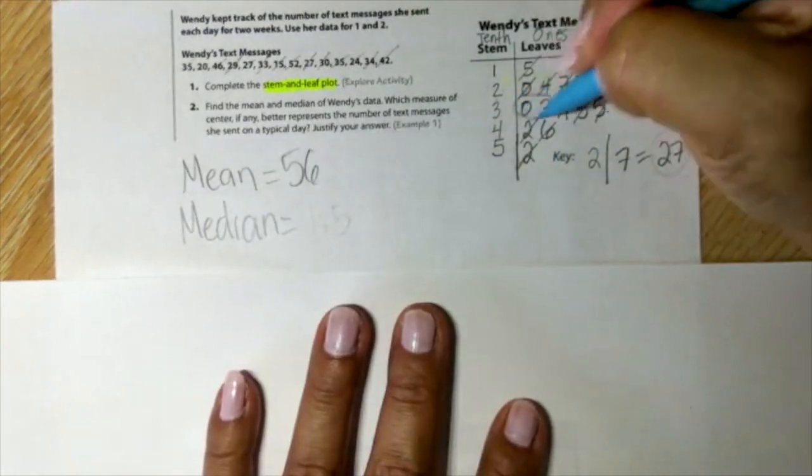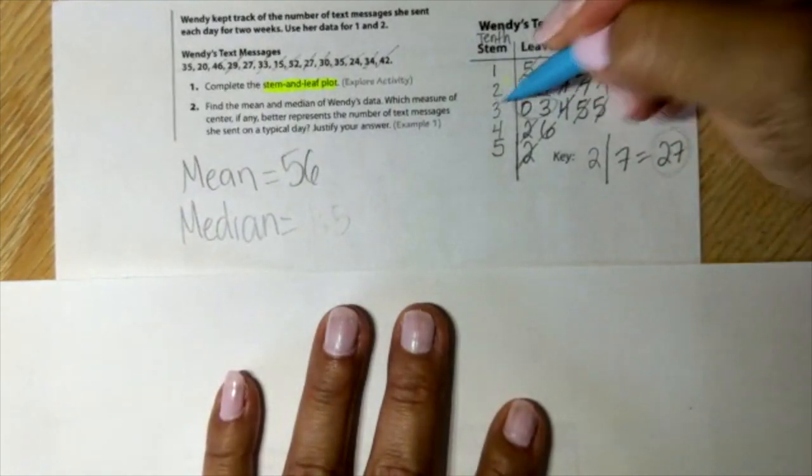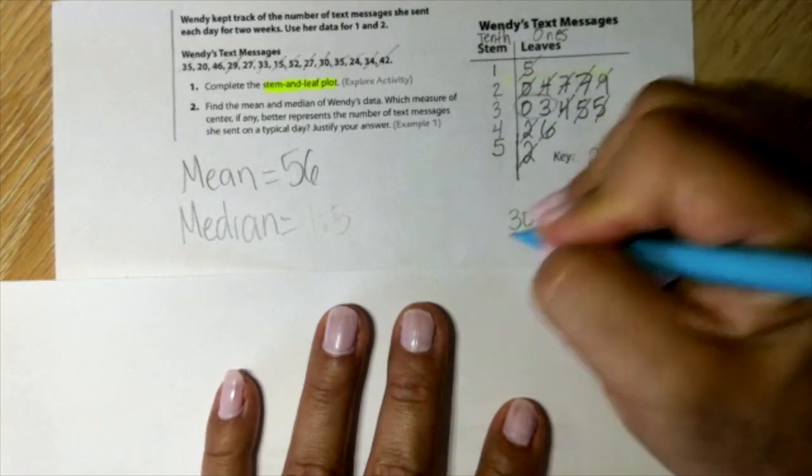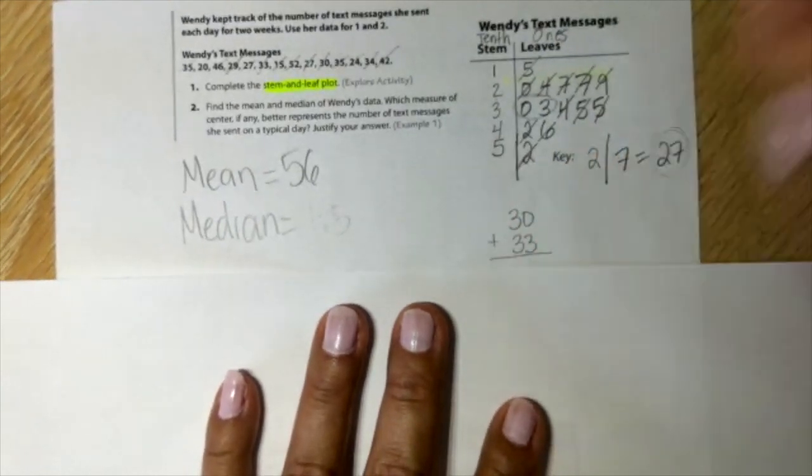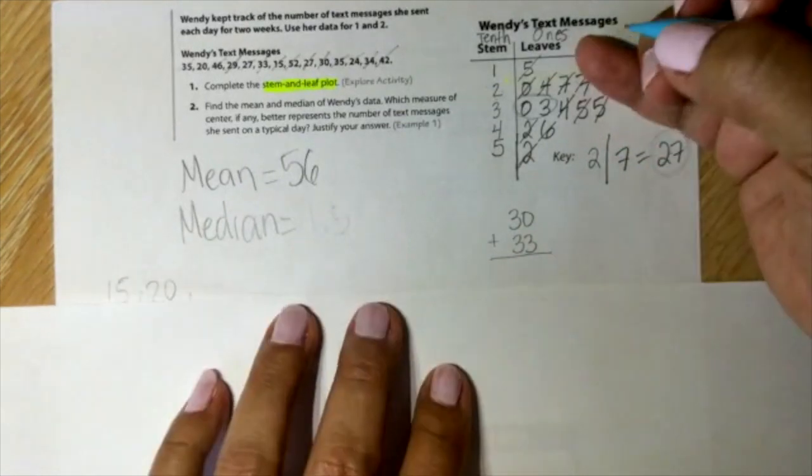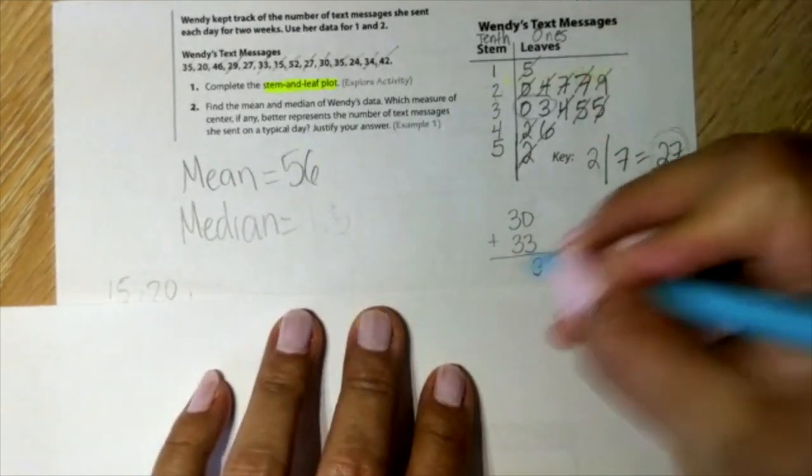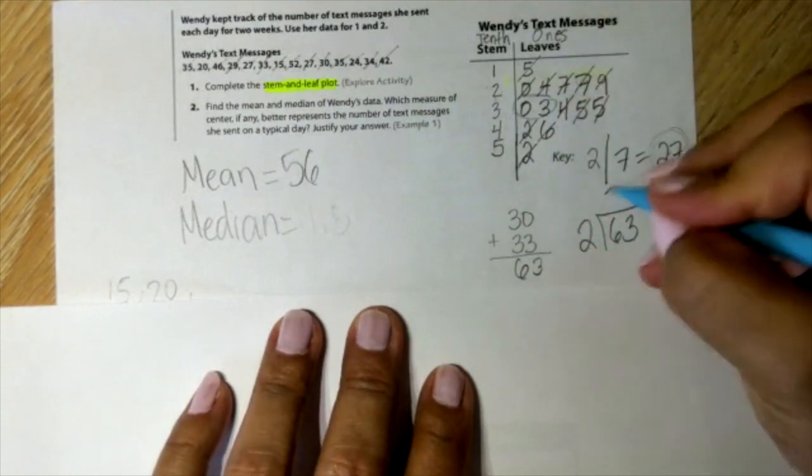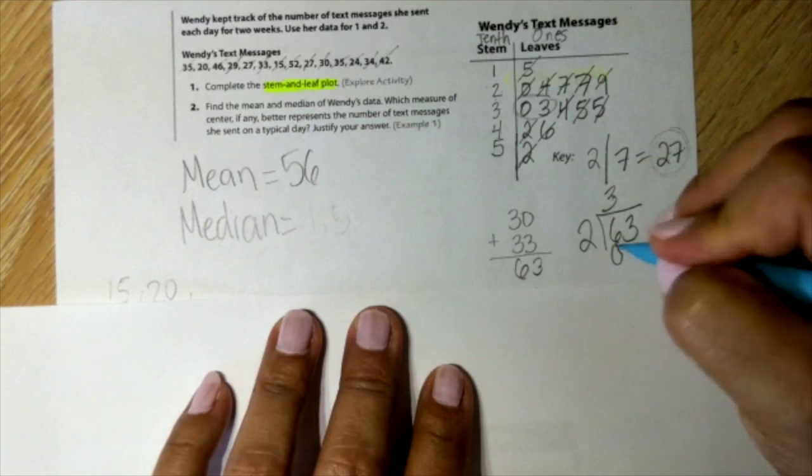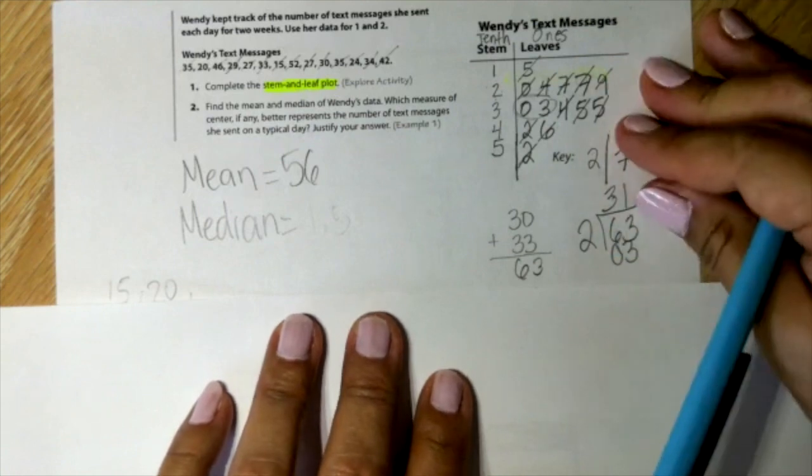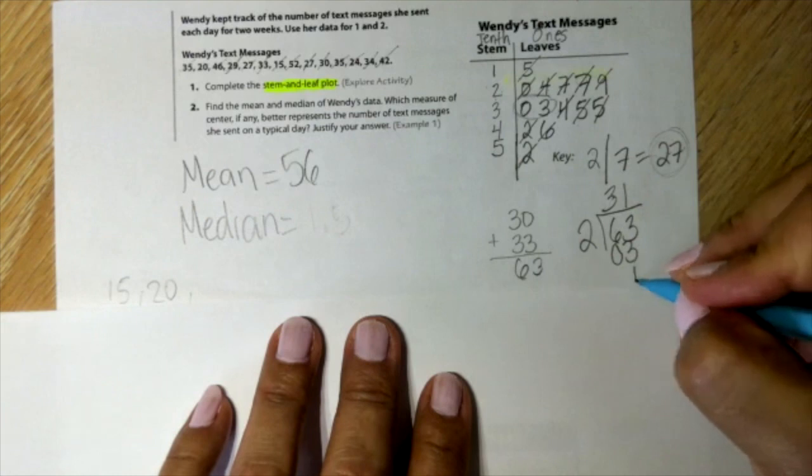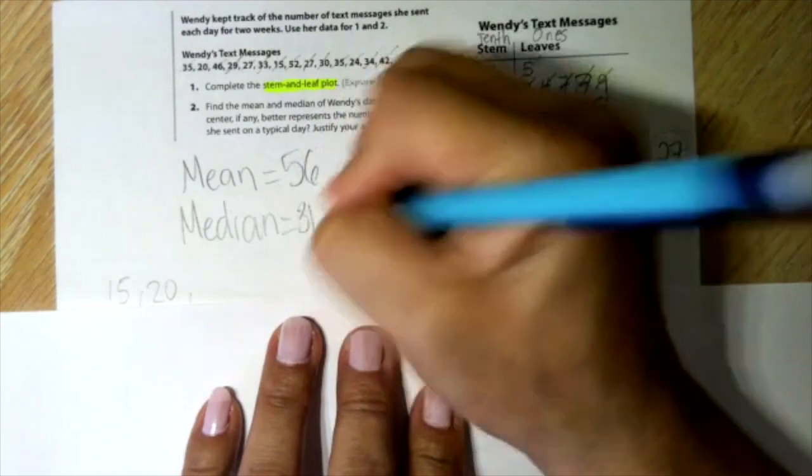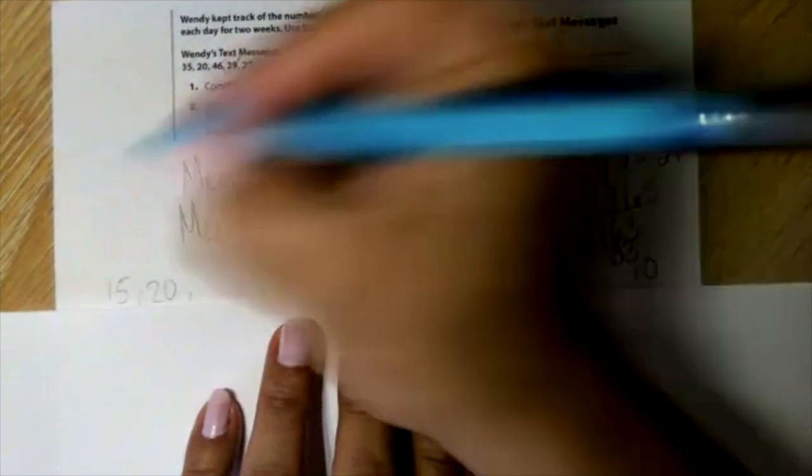And we have two numbers, because these are the two in the middle. So that means it's 30 and 33. So 30 plus 33 will be 63, then 63 divided by 2, decimal 31.5.